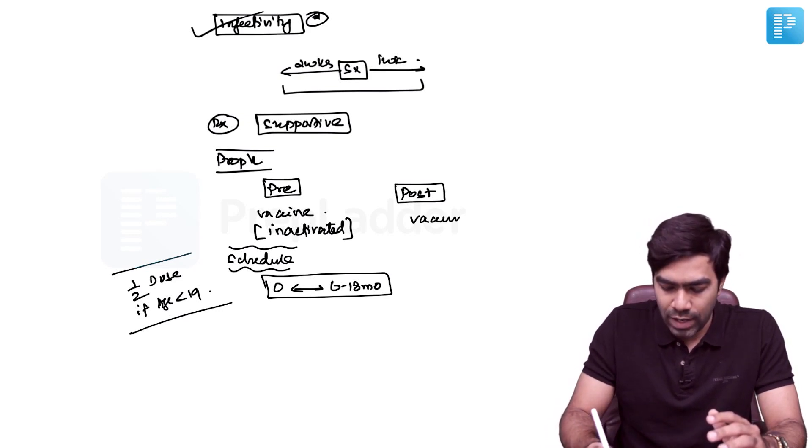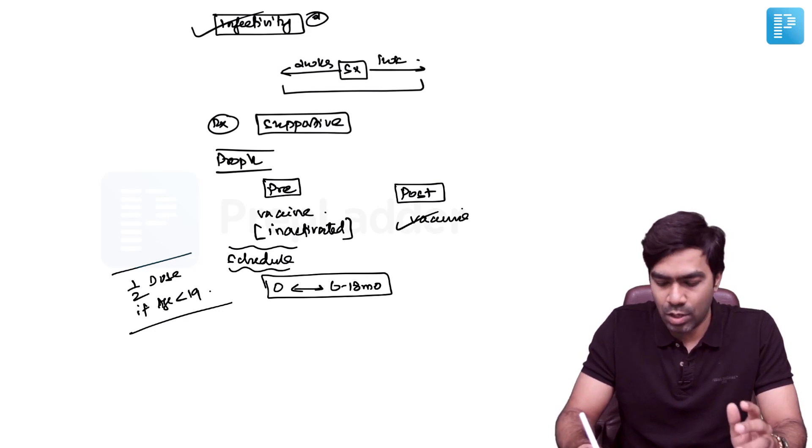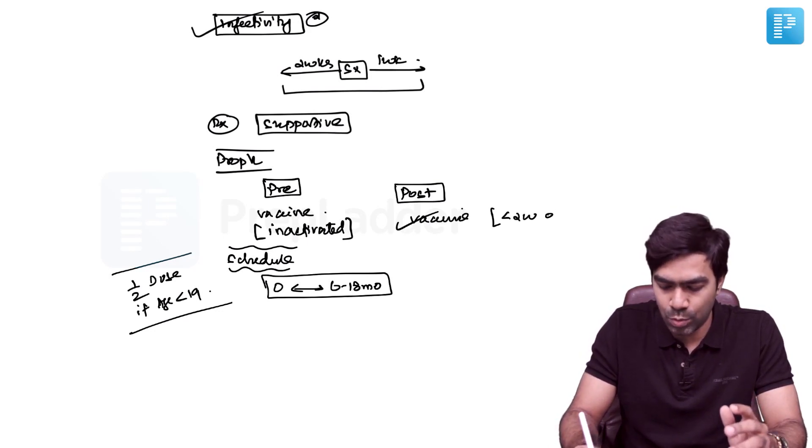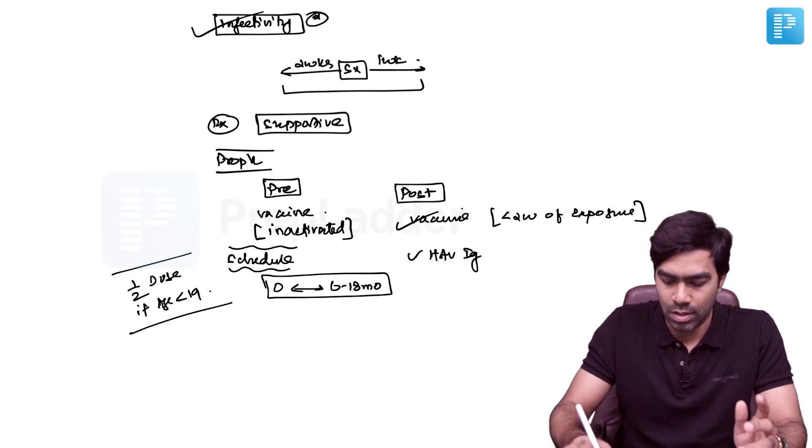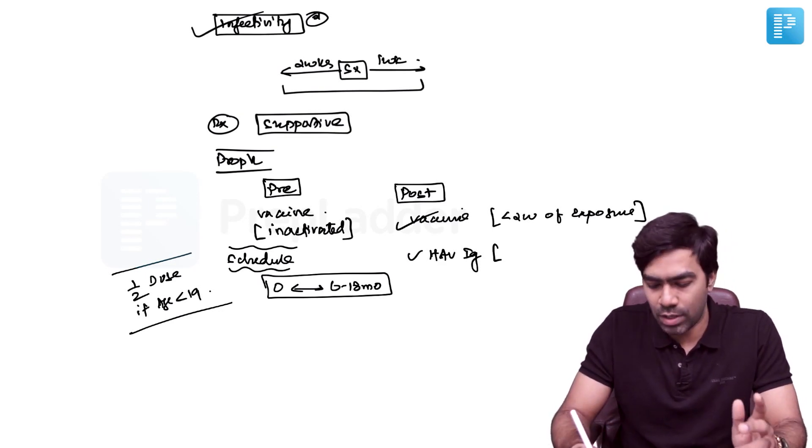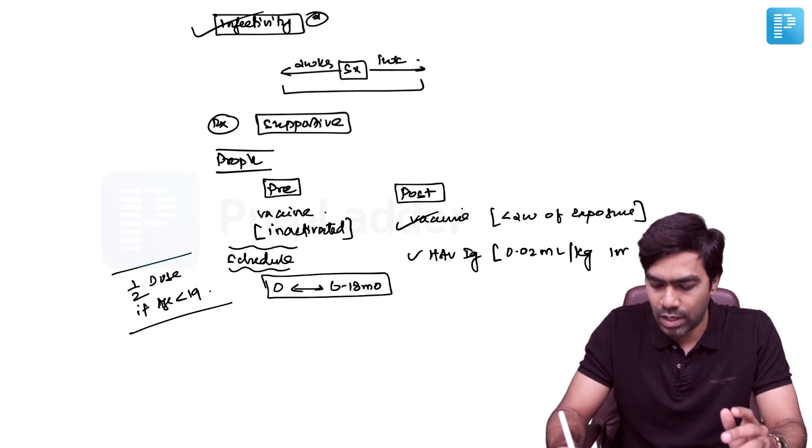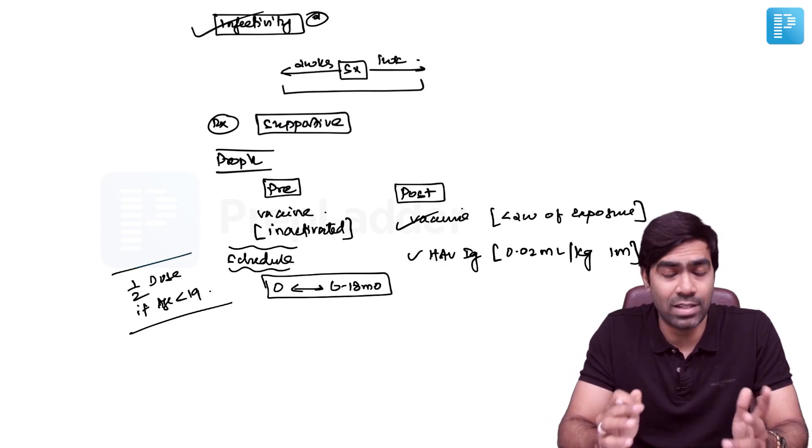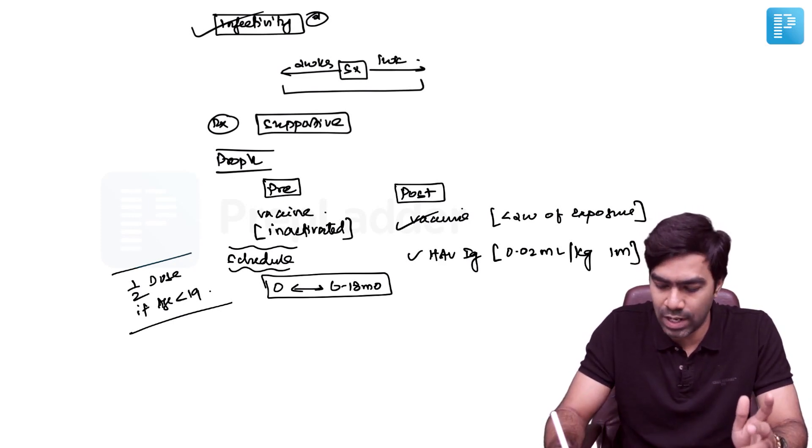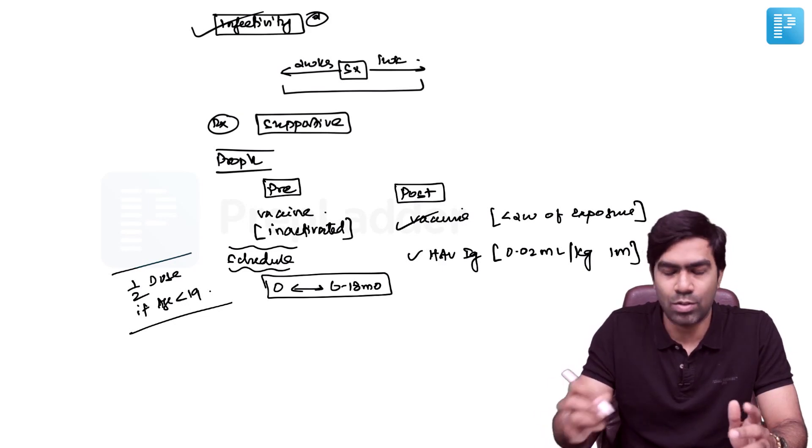As far as post-exposure prophylaxis is concerned, you can use vaccine, which is better and must be given within two weeks of exposure. Alternatively, you can use Hepatitis A virus immunoglobulin, which is available. The dose of HAV immunoglobulin is approximately 0.02 ml per kilogram intramuscular, and it should be given as soon as possible.